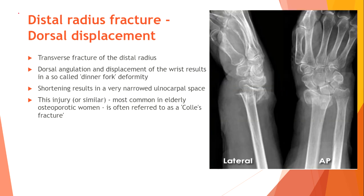Distal radius fracture with dorsal displacement. A transverse fracture of the distal radius with dorsal angulation and displacement of the wrist results in a so-called dinner fork deformity. Shortening results in a very narrowed ulnocarpal space. This injury is most common in elderly osteoporotic women and is often referred to as a Colles' fracture.